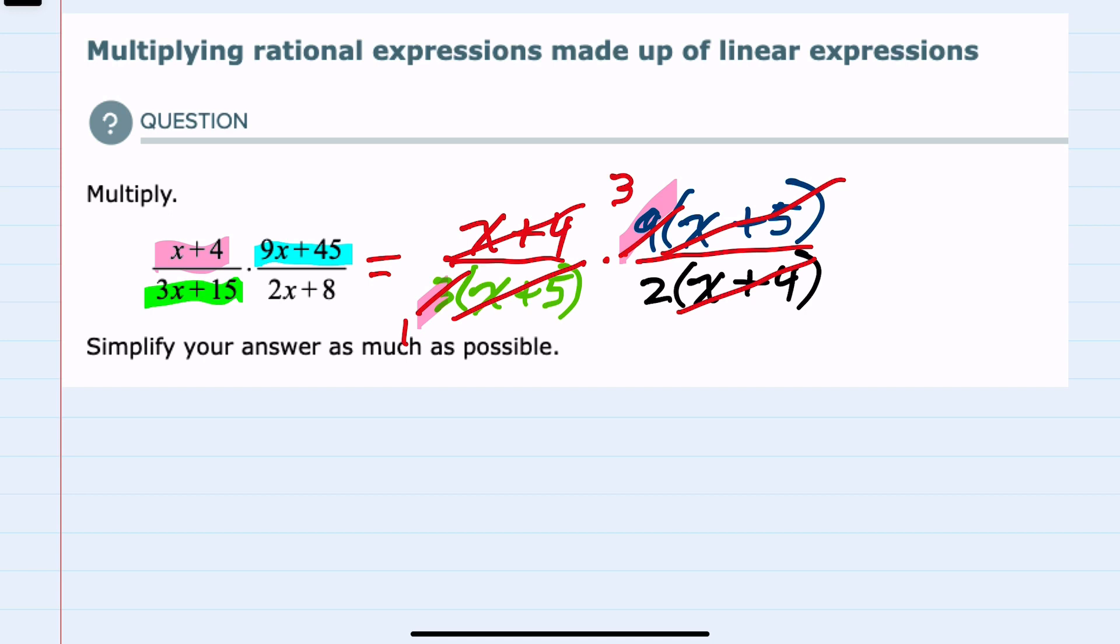So having done all of the canceling available to us, we can multiply the top. Multiplying everything, it's canceled except for the 3. And in the bottom, everything is canceled except the 2. So this expression has simplified all the way down to 3 halves.